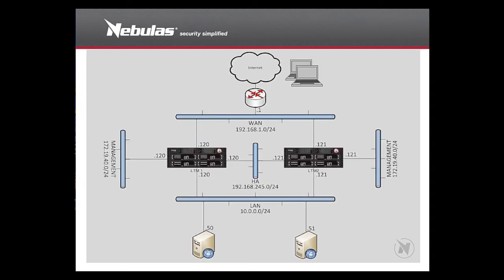So here we go, this is our network. You can see it consists of two F5 Big-IPs that are in an HA pair. We're going to have one in primary — that will be our active Big-IP. That's going to consist of two self-IPs either side of the network. On the WAN side of the network, we're going to have the address 192.168.1.100 in a /24.